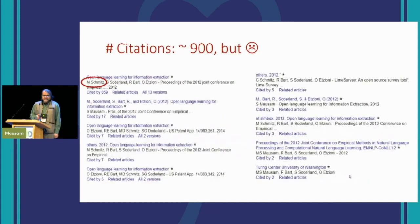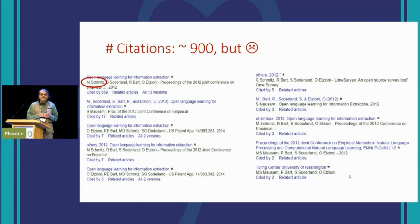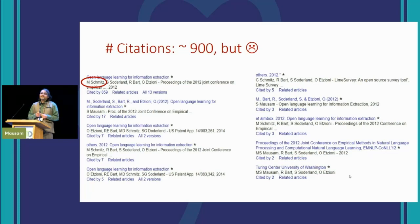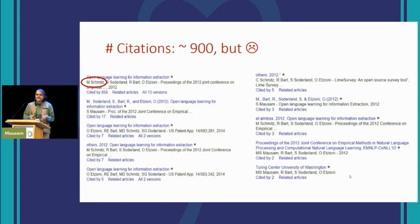The second thing is about citations. We've had about 900 citations, but look at how Google Scholar lists this paper — it shows the first author as Michael Schmidt, omitting my name entirely because I have a single name. Many students use Google Scholar for BibTeX entries, so they cite our paper as 'Schmitz et al.' I've come to terms with it, but I urge you all to consider using DBLP or Semantic Scholar, which have much cleaner data than Google Scholar.